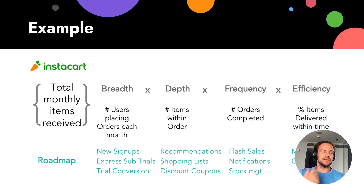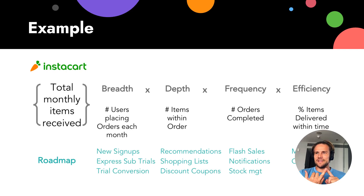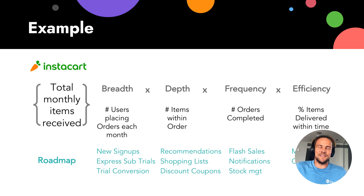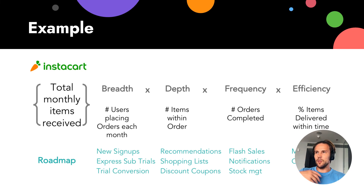So what does the roadmap look like? For breadth, they need more users: new signups, more simplified trials, because more simplified trials means more signups, and of course trial conversion. For depth: when you buy three things, they can recommend four things — users who buy sneakers usually buy socks, for example. They can provide shopping links to make it easier to order, and offer discounts or coupons when you're about to check out.